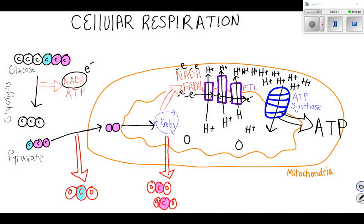One other thing worth mentioning is that the electrons are still over here in the electron transport chain — we need to do something with them. Oxygen is actually going to accept them, so the electron is going to come over here and bond with oxygen. And then after the oxygen has those negative electrons on it, it is going to attract hydrogen ions. And what do you get if you have an oxygen and two H's? H2O. So that is our other output.